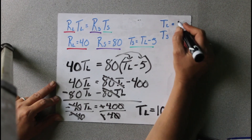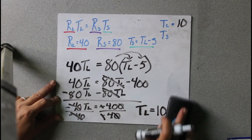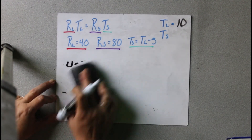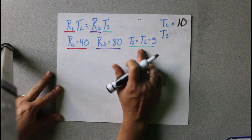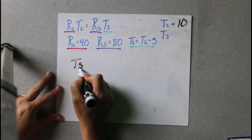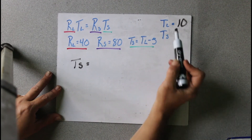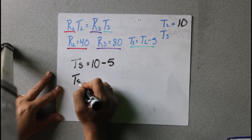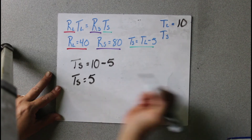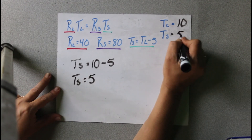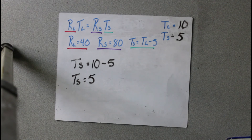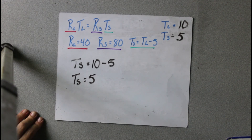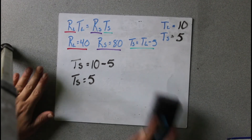So if TL equals 10, now we have to find TS. To find that, we just use this equation: TS equals TL, which is 10, minus 5. So TS equals 5. Hope that makes sense to everybody. Go ahead and pause the video, do the practice problems, and I will come back and show you how to do it.